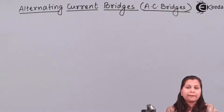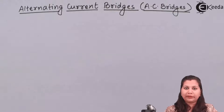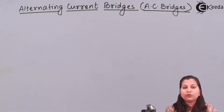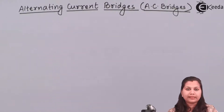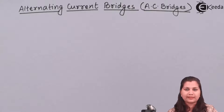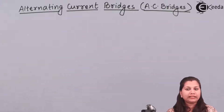Now, these alternating current bridges are based on the Wheatstone bridge. Just like the Wheatstone bridge, it consists of four arms and in these four arms it will have four impedances. In the Wheatstone bridge, we were having four resistances — P and Q were the ratio arms, these are the known resistances, R is the unknown resistance, and S is the standard resistance. In case of alternating current bridges, we will have four impedances, which are a combination of resistance, inductance and capacitance. In place of galvanometer, we will have a detector and this detector is used for balancing the bridge.